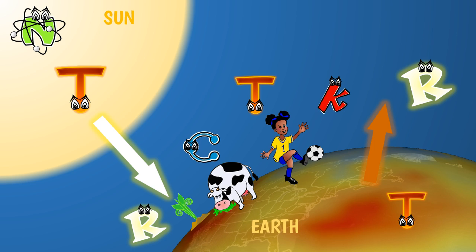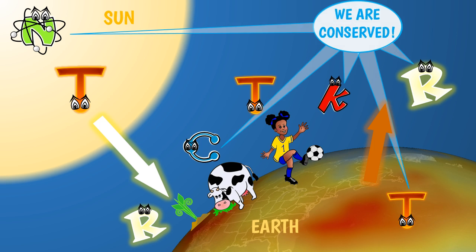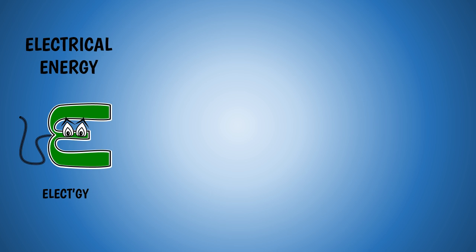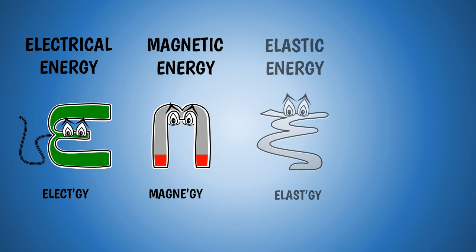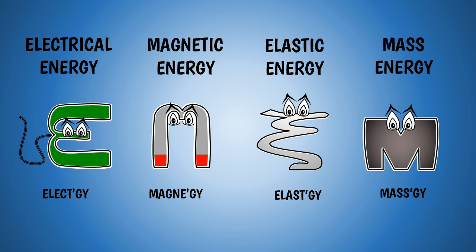That's quite a journey — from nuclear energy in the center of the sun to radiant energy in the infrared glow of the earth. We are conserved. To complete our survey of the E.G.s, there's electrical energy, magnetic energy, elastic energy — when a spring or a rubber ball is compressed or stretched — and last but not least, mass energy: the energy that an object is worth simply because it has some mass. That makes 11 E.G.s.